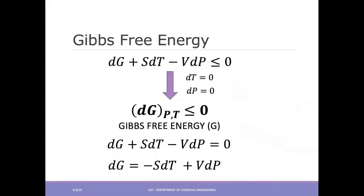Recall the Clausius inequality in terms of Gibbs free energy. We are considering a closed system with a fixed number of moles and PV work only. The fundamental relation is dG = -SdT + VdP. At constant temperature and pressure, dG at constant P and T is less than or equal to zero. So therefore our equation becomes dG = -SdT + VdP.